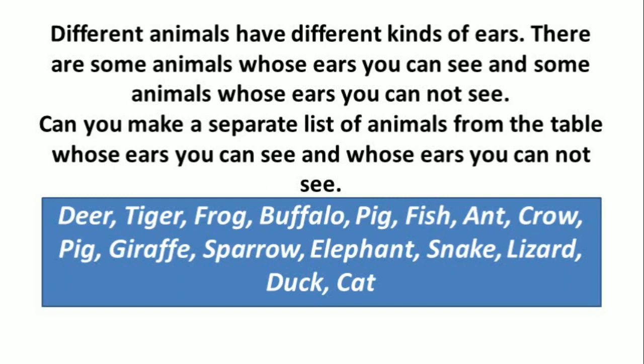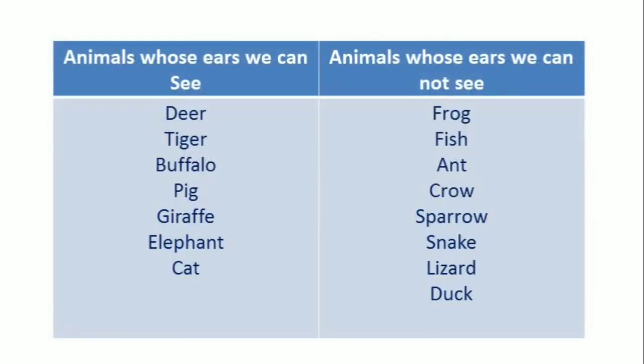Different animals have different kinds of ears. There are some animals whose ears you can see and some animals whose ears you cannot see. Can you make a separate list of animals from the table whose ears you can see and whose ears you cannot see? Deer, tiger, frog, buffalo, pig, fish, crow, pig, giraffe, sparrow, elephant, snake, lizard, duck, cat.